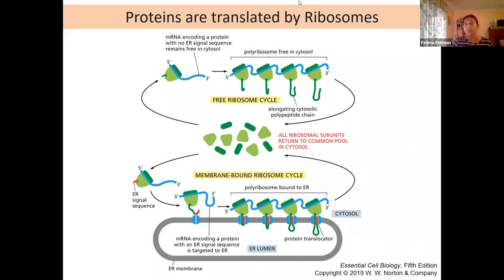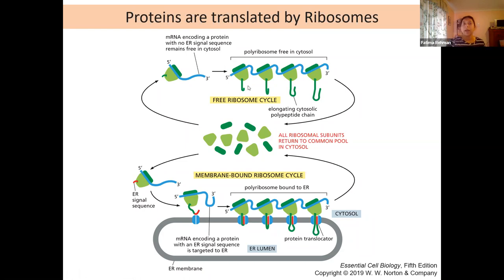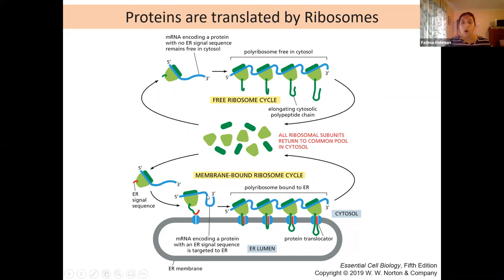Proteins are translated by ribosomes — as they are made into polypeptide chains, if free in the cytosol they will just produce the polypeptide chain that makes its tertiary structure and goes to do its thing. But if it's part of your membrane-bound ribosomal cycle, the ribosome is going to be bound to a protein translocator on the actual ER membrane. As that polypeptide chain is being translated, it will first start off with a signal that's recognized by that translocator.